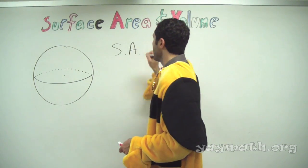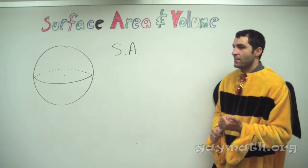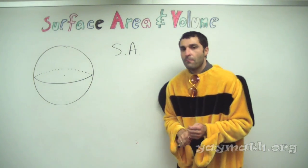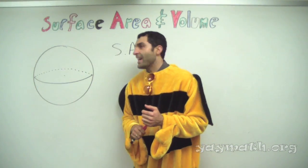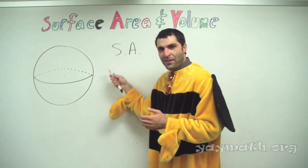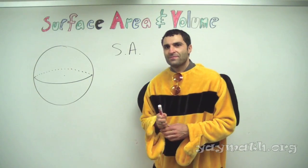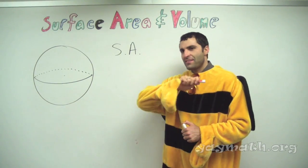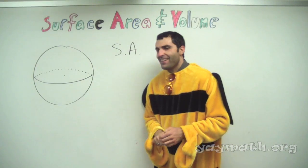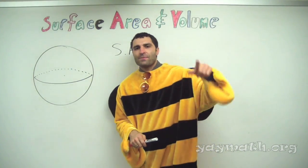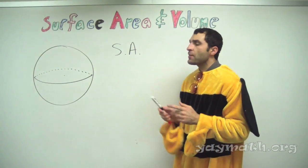We've been drawing circles for a while. You always draw a circle and then doubt yourself at the very end — you go back and check it. When you draw a circle on the board you just have to commit, you just have to go for it.